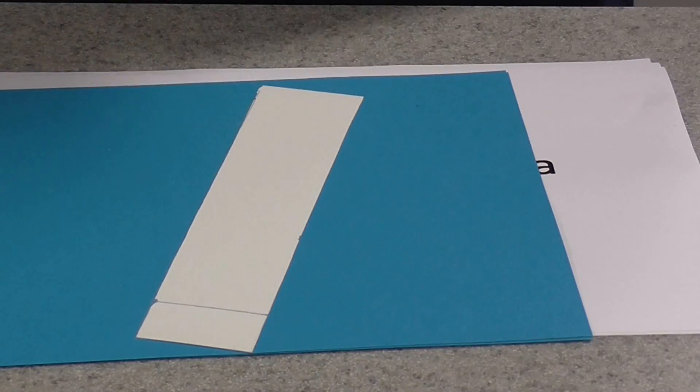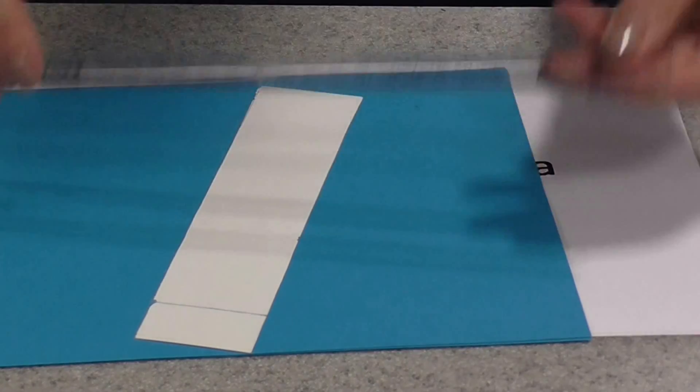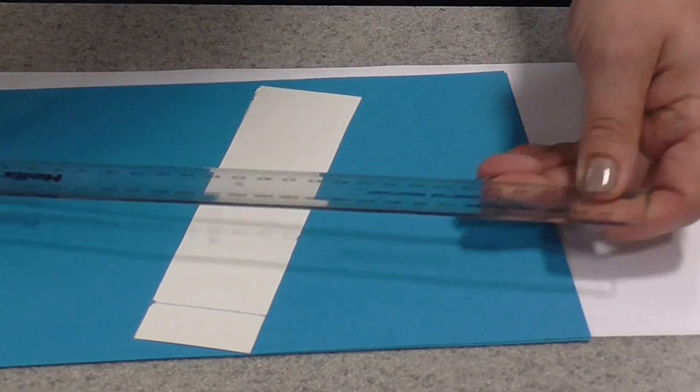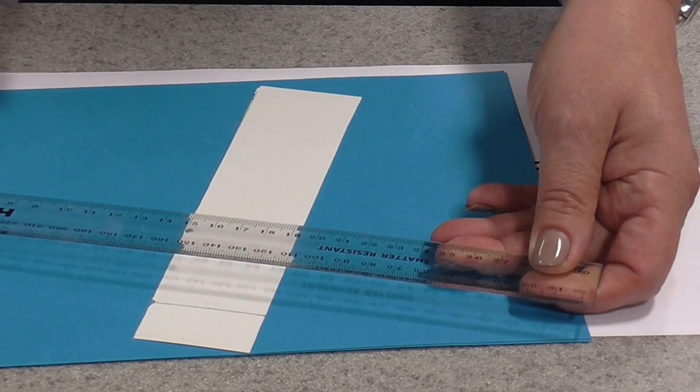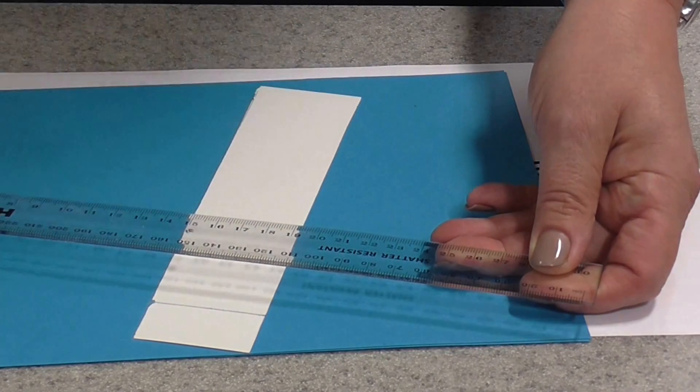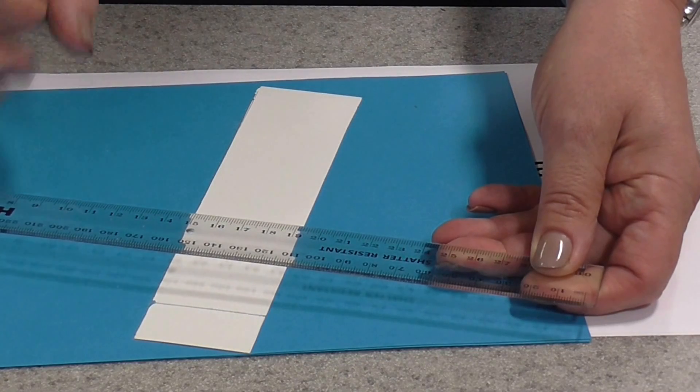Now, when you've cut your strip, the next thing you do, you get your ruler and a pencil. It must be a pencil, not a pen. And you draw yourself a line around 2 centimeters from the bottom of the strip. That will represent the origin.